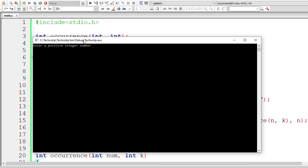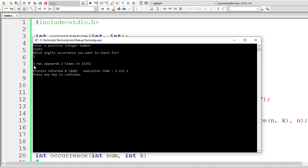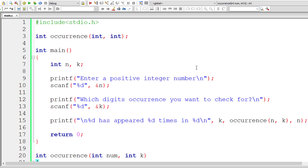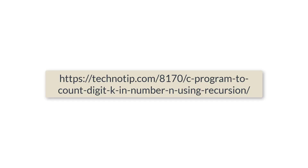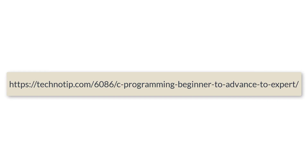I'll give one more number, 11253 or something like that, and check for the occurrence of 1. One has appeared 2 times in this number. Please visit the link in the description section of this YouTube video for source code, notes, and discussion about this topic. Stay subscribed to our YouTube channel and blog, and please share this video. Thank you.